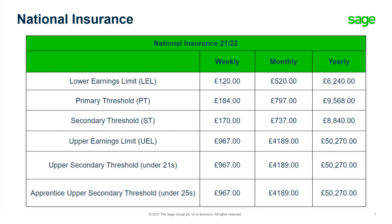Next we have the changes being made to National Insurance. Here we can see the new weekly, monthly and yearly rates for the lower earnings limit, the primary threshold, the secondary threshold, the upper earnings limit, the upper secondary threshold for under 21s, and the apprentice upper secondary threshold for under 25s.